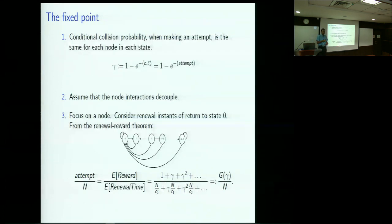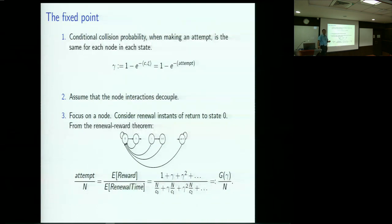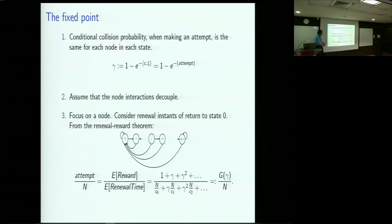Under the decoupling assumption, this node is interacting and experiencing a collision probability of gamma, and so the independence follows. The expected renewal time: when in state 0 you're attempting with probability c_0/n, so the expected waiting time before one attempt is n/c_0. With probability gamma you experienced a collision and have to wait another n/c_1 because you've moved to state 1, and so on. There is a factor n that can be pulled out, so the renewal time is g(gamma)/n where g(gamma) equals (1 + gamma + gamma^2 + ...) divided by (1/c_0 + gamma/c_1 + gamma^2/c_2 + ...).